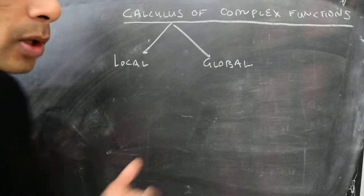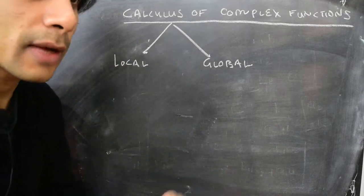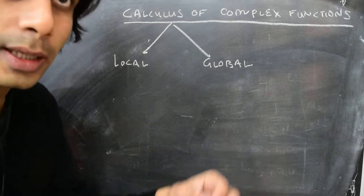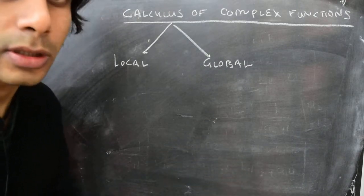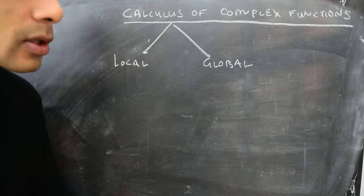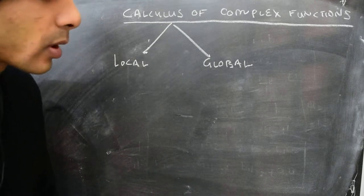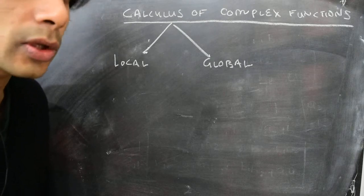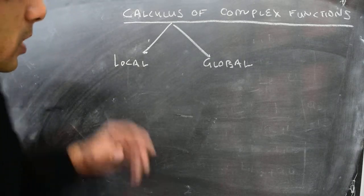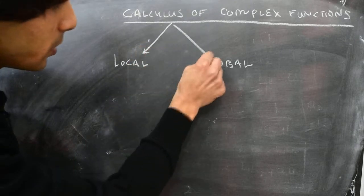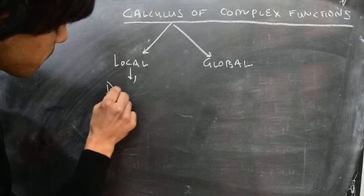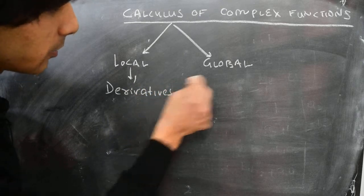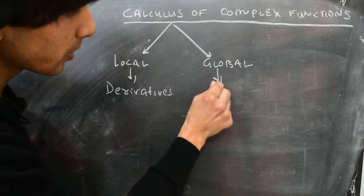By local properties we mean that we have a function and we are looking at it at a very microscopic scale — what it's doing locally near a point x, in the case of real functions. Globally, we're talking about notions like areas and volumes. To be more precise, local properties refers to derivatives, and global properties refers to integrals.